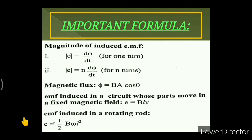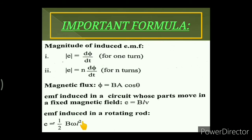The EMF induced in a circuit whose parts move in a fixed magnetic field is given as E = Blv, where B is the uniform magnetic induction, l is the length of the conductor, and v is the velocity with which the conductor is moved. The EMF induced in a rotating rod is given as E = ½Bωl², where ω is the angular velocity.